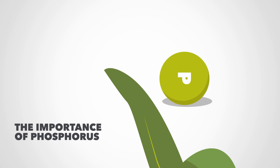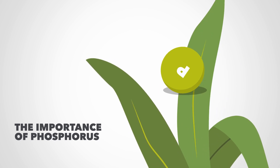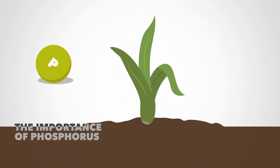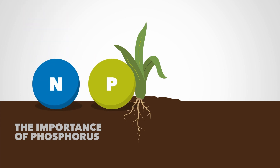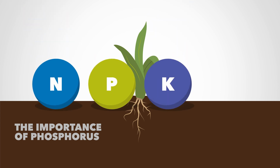Phosphorus is required by plants for optimum growth and reproduction. Phosphorus should be included in every nutrient management plan because it plays a vital role in energy transfer and photosynthesis.